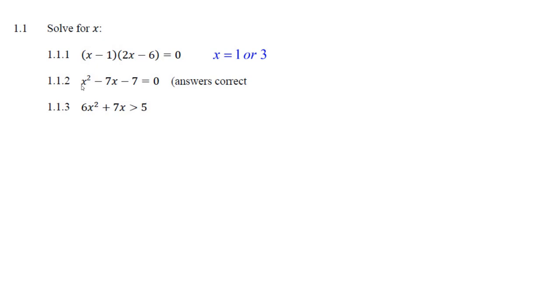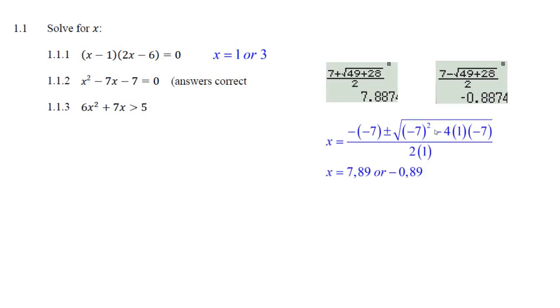This is the quadratic formula. A is 1, B is minus 7, C is minus 7. You just put it in the quadratic formula just like this. That's going to give you plus 28, then 49, positive 7 all over 2. Put that in your calculator and you get two answers: 7.89 or negative 0.89.